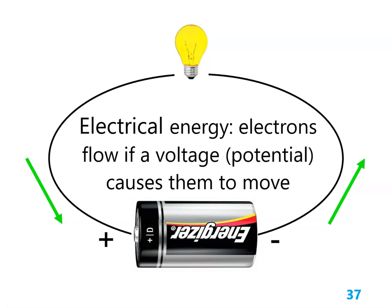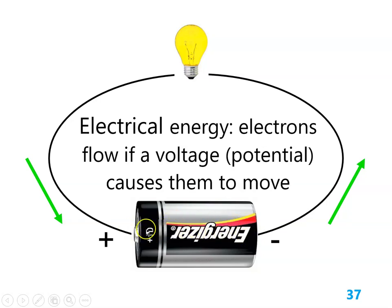We get electrical energy whenever we have a voltage or potential — voltage and potential mean the same thing. If we have a battery cell, it has a negative terminal and a positive terminal. The negative terminal tends to push electrons; the positive terminal tends to attract them. What's going on is a set of redox reactions where one side holds on to electrons less tightly, and as electrons flow through the wire, we can convert that energy into other forms.